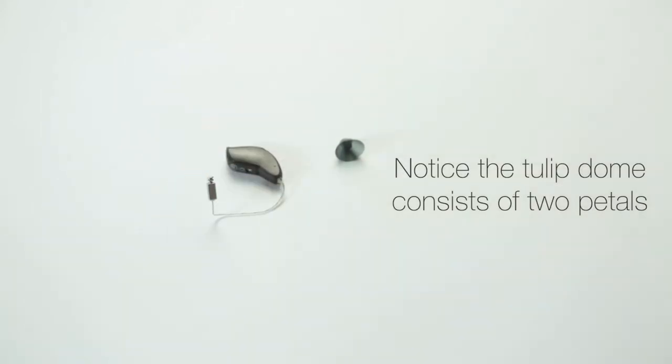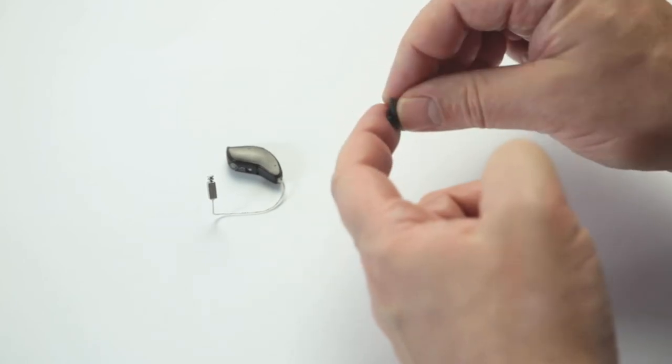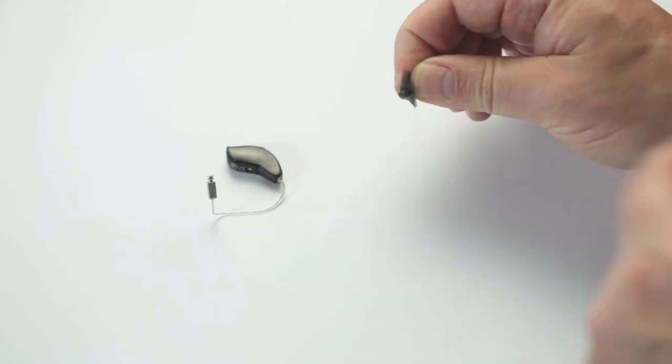Notice the tulip dome consists of two petals. Hold each petal between your index finger and thumb, and slowly bend one of the two petals forward.